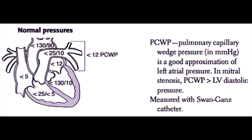Next is the right ventricle, which has a normal systolic pressure of less than 25 millimeters of mercury, and a normal diastolic pressure of less than 5 millimeters of mercury. Past the pulmonic valve is the pulmonary artery. The pulmonary artery pressure is usually less than 25 over 10 millimeters of mercury. If the mean pulmonary artery pressure is greater than 25 millimeters of mercury, that denotes pulmonary hypertension.